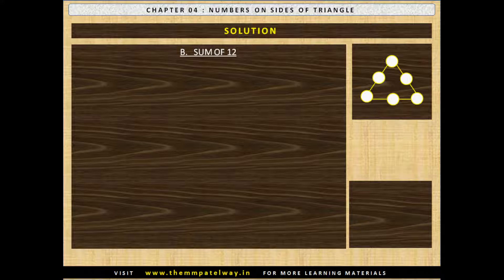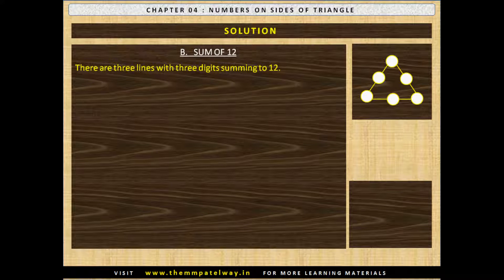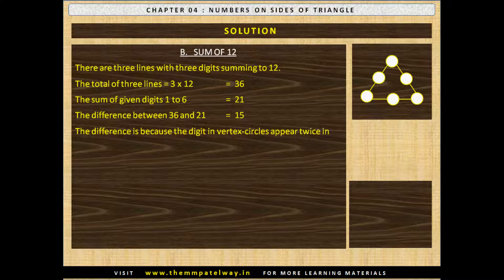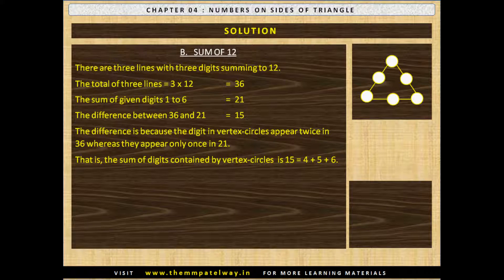Now let us see the solution for getting a sum of 12. We will follow the same process. There are 3 lines with 3 digits summing to 12. The total of 3 lines is 3 into 12, that is 36. The sum of given digits 1 to 6 is 21. The difference between 36 and 21 is 15. This difference is because the digits in vertex circles appear twice in 36 whereas they appear only once in 21. That is, the sum of digits contained by vertex circles is 15, equal to 4+5+6.